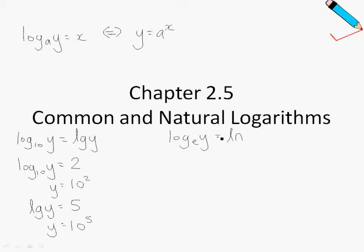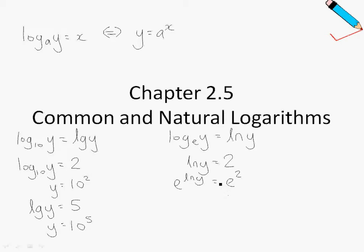Let me show you how to solve a very simple equation. Suppose I have ln y equals 2. To solve for y, we will take exponential — or e — on both sides of the equation. So it looks like: e^(ln y) = e^2. Note that e and ln cancel each other out, so y is just e squared.